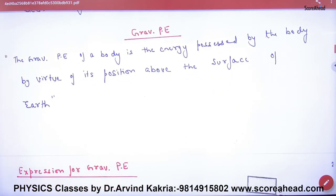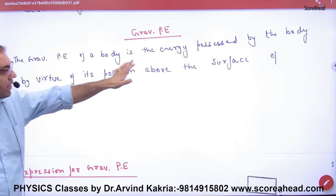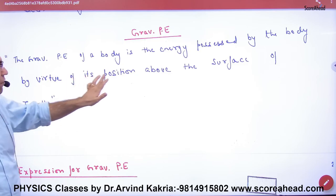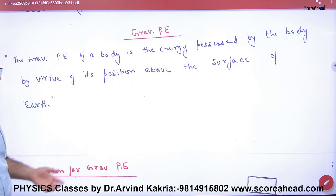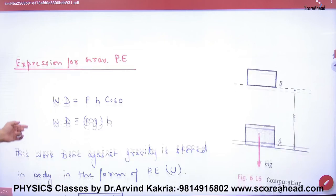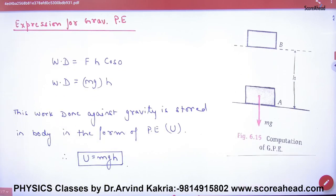Gravitational potential energy is the energy possessed by a body by virtue of its position above the surface of the earth. Where will the body go and what is its gravitational potential energy?